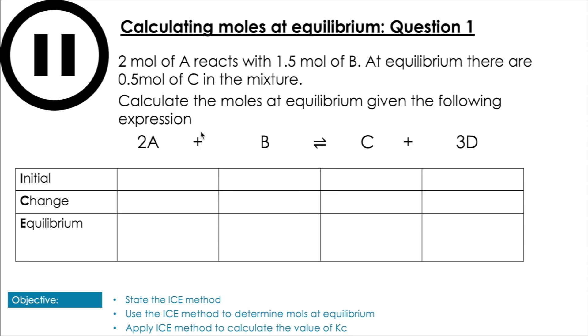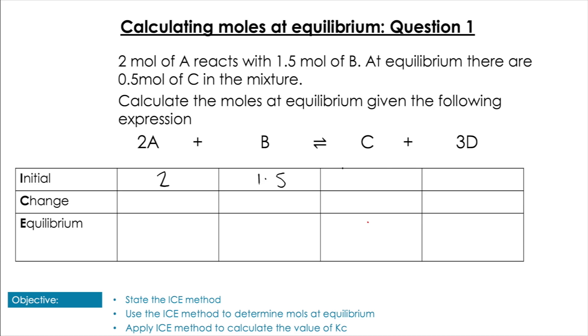Hopefully that wasn't too difficult. Let's go through it. Just like before, I'll put all the values from the question into the table. I've got the initial values of A and B, the final value of C which is 0.5, and the initial values of C and D which were zero. Looking at the balanced equation, I fill in the changes: -2x for A, -x for B, +x for C, and +3x for D.